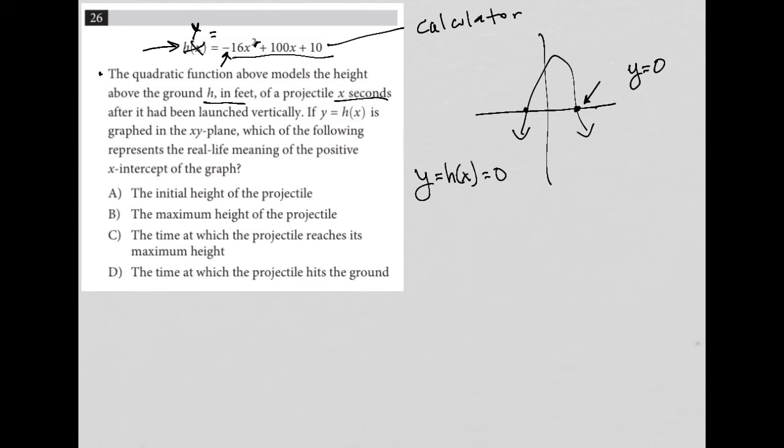So choice A says the initial height of the projectile. Yeah, I guess that makes sense. Initial height would be before launching. So that would be zero. So I'm not going to cross that out for right now. B, the maximum height of the projectile. No, the maximum height would be here. And that's definitely not on the x-intercept.